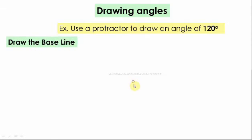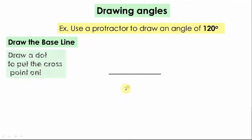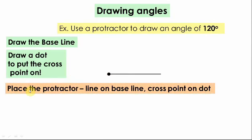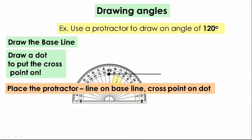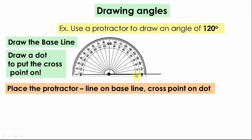Draw the baseline. Draw a dot to put the center of the protractor on it. After that, place the protractor line on the baseline and the cross or the center of the protractor on the dot by this way.